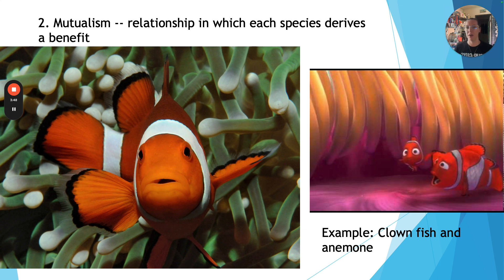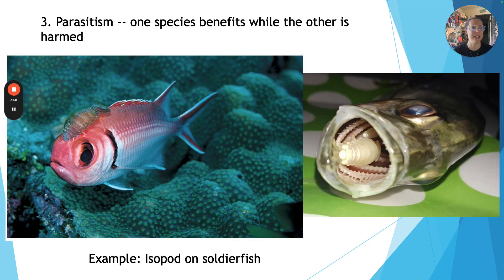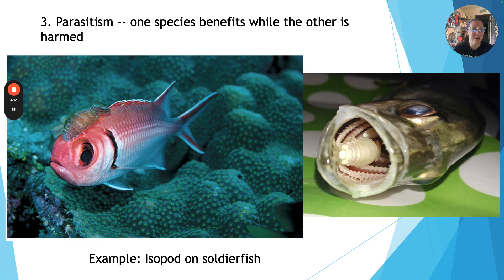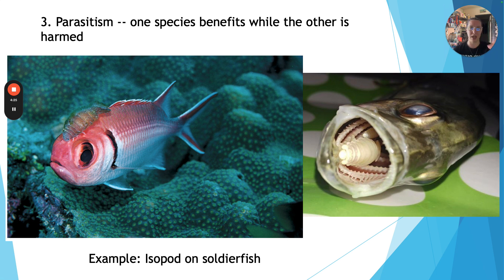Consider other ocean relationships that might also be mutualistic — both species must benefit. Lastly is parasitism, where one species benefits while the other is harmed. Isopods are common ocean parasites. In one example, a soldier fish has an isopod attached to the top of it, almost acting like a brain controlling it.